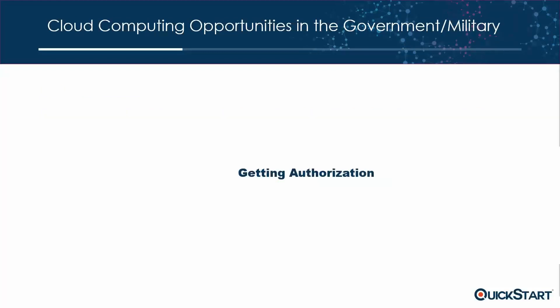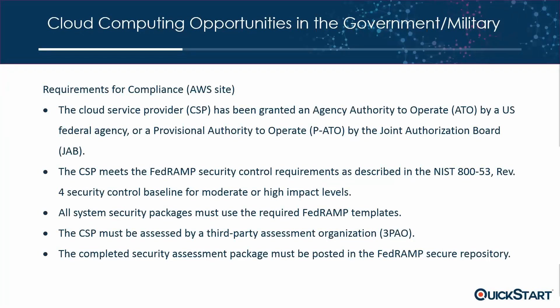So how do we get authorization? If you're an integrator wanting to do work for the government, you have to get certain requirements met for compliance. The first thing is that the service provider will be granted an Authority to Operate. There's also what's called a provisional — a temporary authority to operate — meaning you could start soliciting, responding to RFPs, etc.